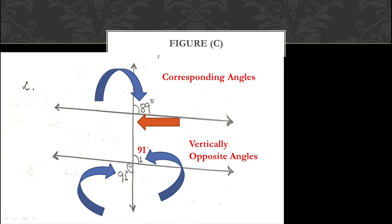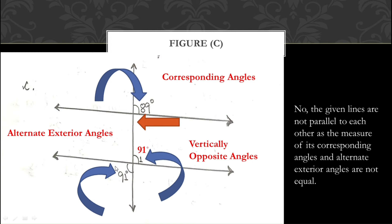There is also another way: 89° and 91° are both in the exterior region and are cross (alternate) angles — they are alternate exterior angles. According to the property, alternate exterior angles should be equal for parallel lines, but 89° ≠ 91°. Therefore the given lines are not parallel. You can mention either reason and it will be correct.